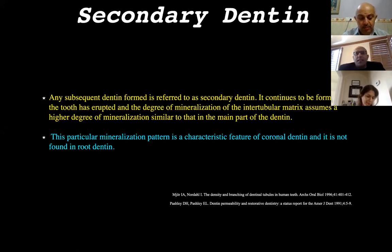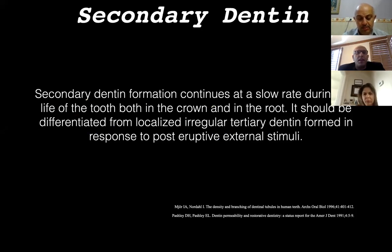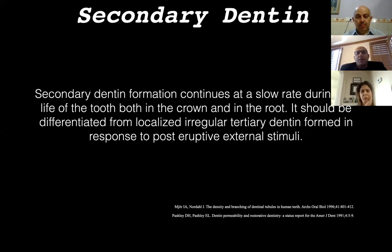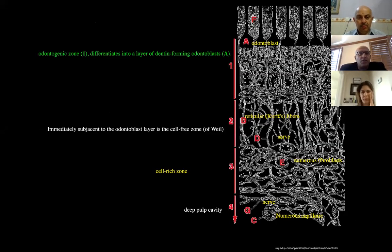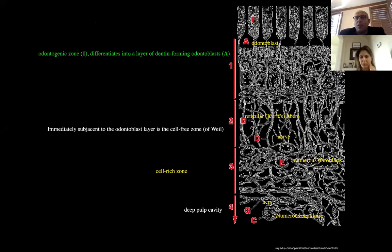Secondary dentin formation continues to accelerate during the life of the tooth, both in the crown and root. It should be differentiated from localized regular tertiary dentin that forms in response to post-eruptive external stimuli like caries or crown preparation. These are the four layers of dentin: the odontogenic zone where you see the odontoblasts; then the immediately sub-adjacent odontoblastic layer called the cell-free zone or Weil zone; then the cell-rich zone; and then the innervation zone.